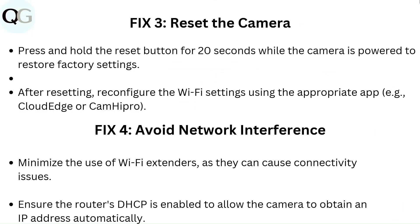Fix 3: Reset the camera. Press and hold the reset button for 20 seconds while the camera is powered to restore factory settings. After resetting, reconfigure the Wi-Fi settings using the appropriate app, i.e., Cloud Edge or Cam HiPro.